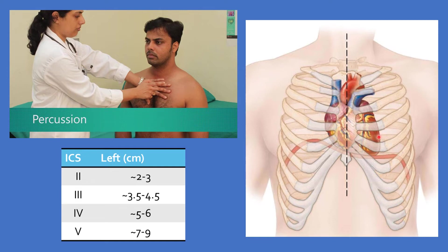Then go to the fifth intercostal space. Percuss from the lateral side, eliciting resonance until you reach the lateral border of the heart and elicit dullness. Measure from the mid-line to the area where you heard the dull sound. The distance should measure approximately 7 to 9 centimeters.